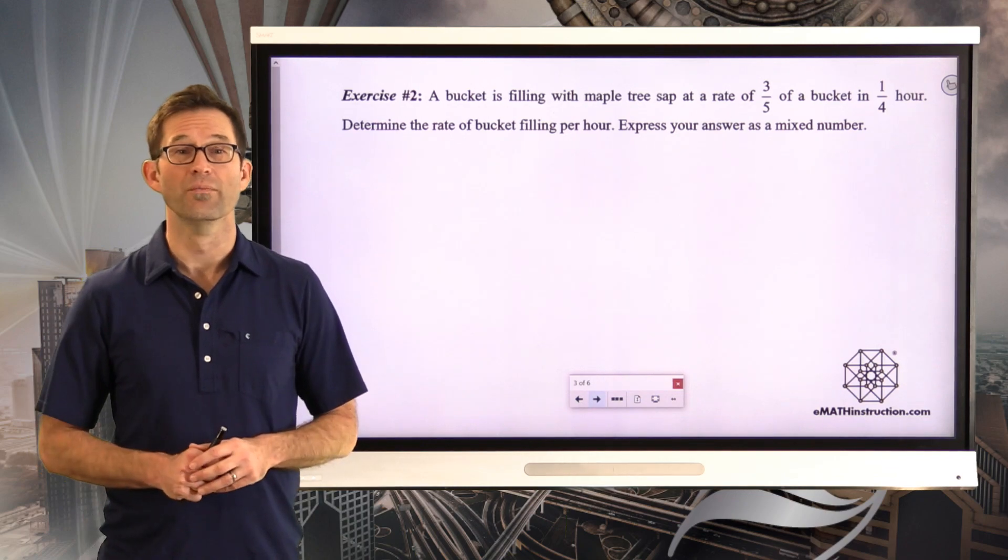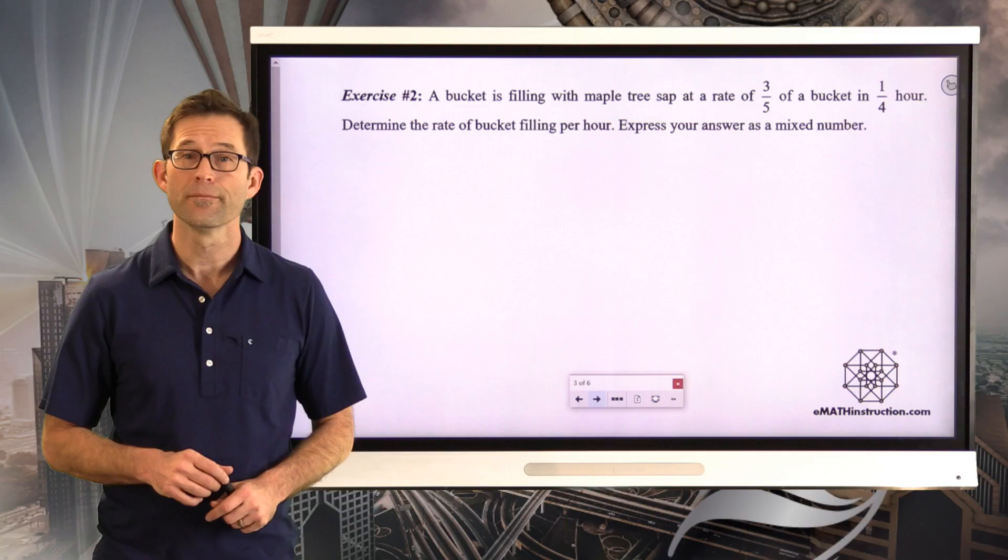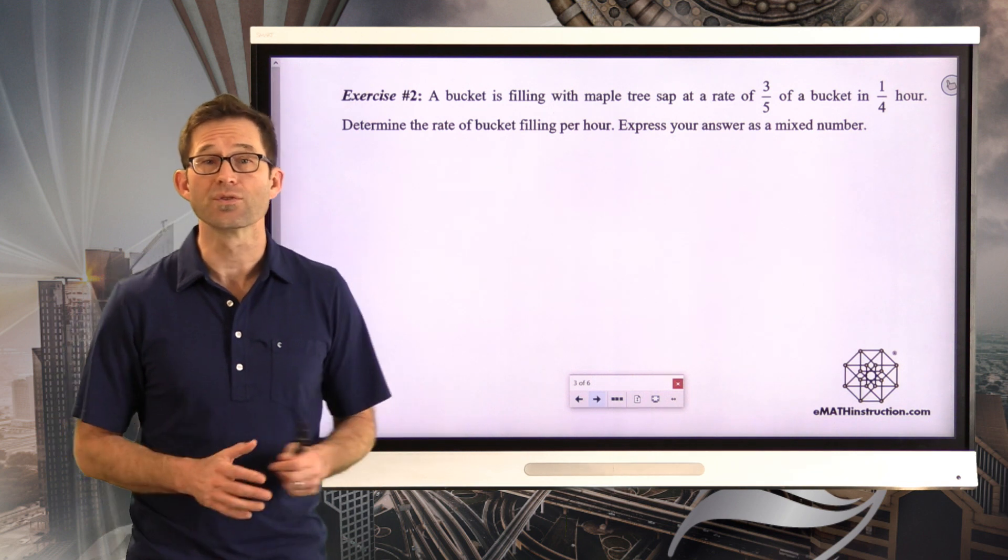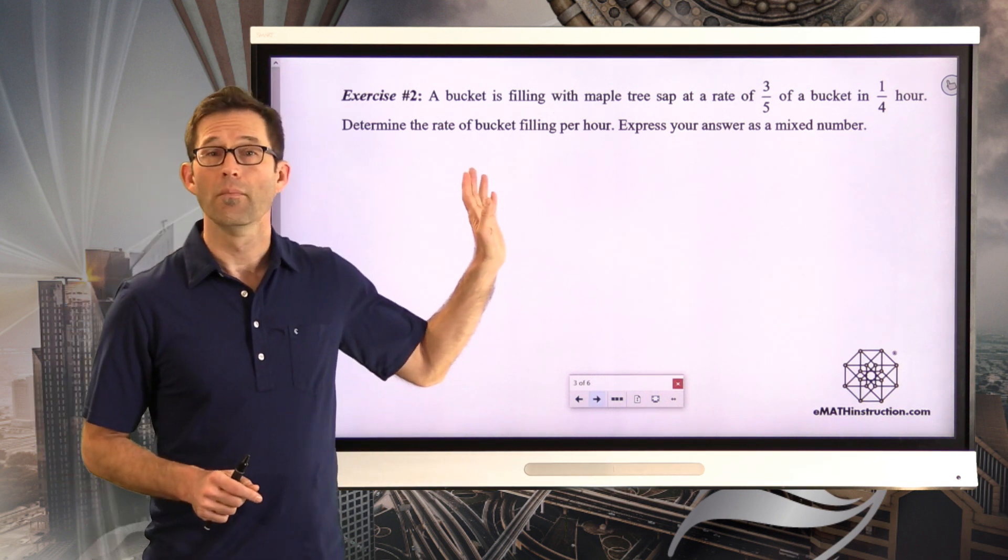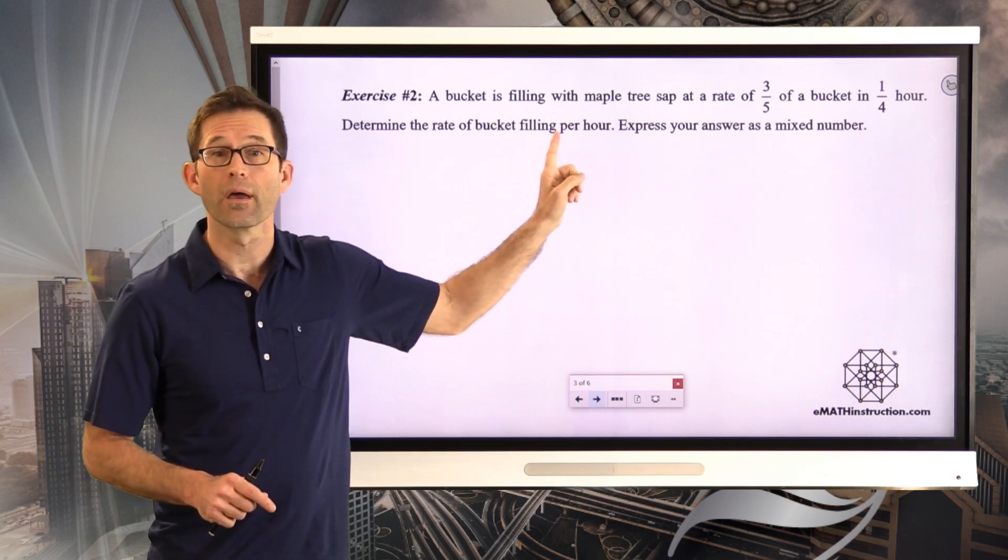All right, let's keep working with ratios that involve complex fractions. Exercise number two. A bucket is filling with maple tree sap at a rate of three-fifths of a bucket in one-quarter hour. Determine the rate of bucket filling per hour. Express your answer as a mixed number. So here it is. We've got a rate that we're looking for. In fact, a unit rate. Bucket filling per hour.